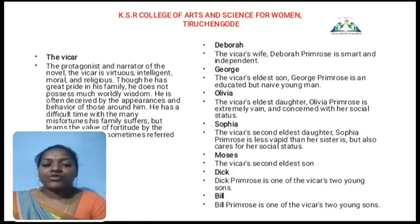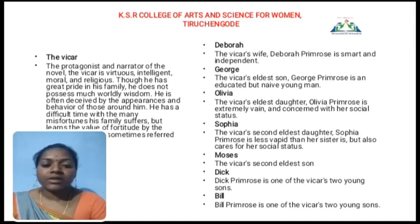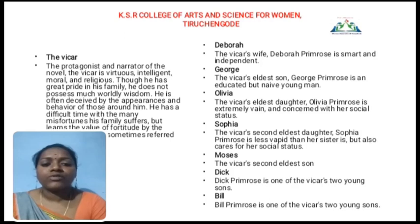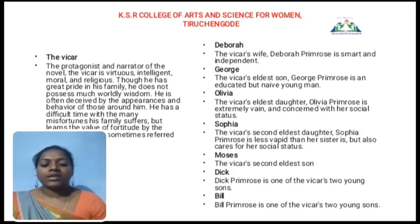The next character is Sophia. Sophia is totally different from Olivia. Olivia is a fashionable girl, while Sophia is a very silent girl. Sophia is the Vicar's second eldest daughter — a really very silent and simple girl. The next character is Moses, the Vicar's second eldest son. Dick and Bill are also the Vicar's sons.